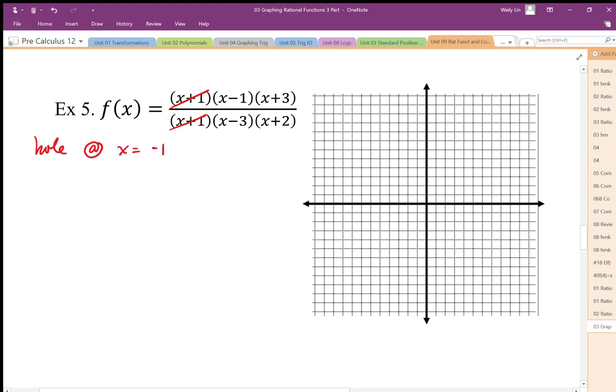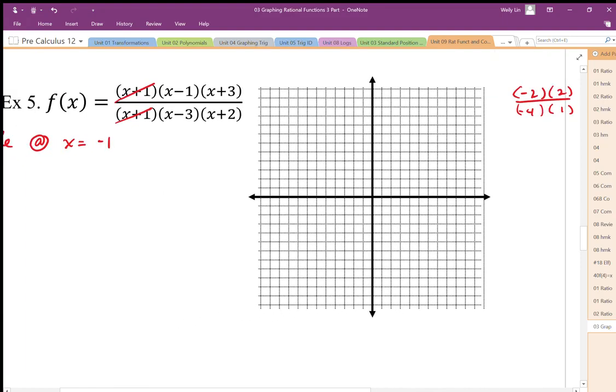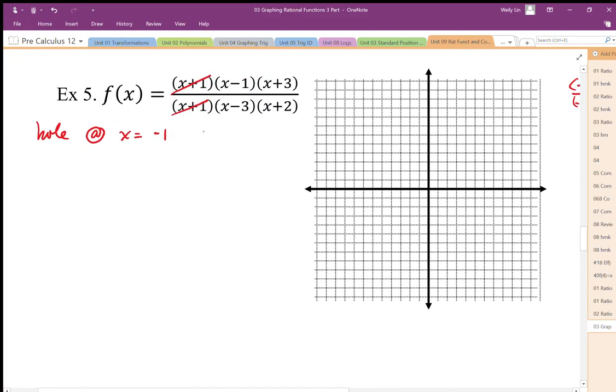So as I plug negative 1 in here, I get negative 2. This one I'm going to have to do off the side here. So I'm going to end up with negative 2 times 2 in the numerator. Negative 1 in here becomes negative 4 times positive 1. So I end up with negative 4 over negative 4. So that looks to be y equals 1. So at x equals negative 1, y equals negative 1.